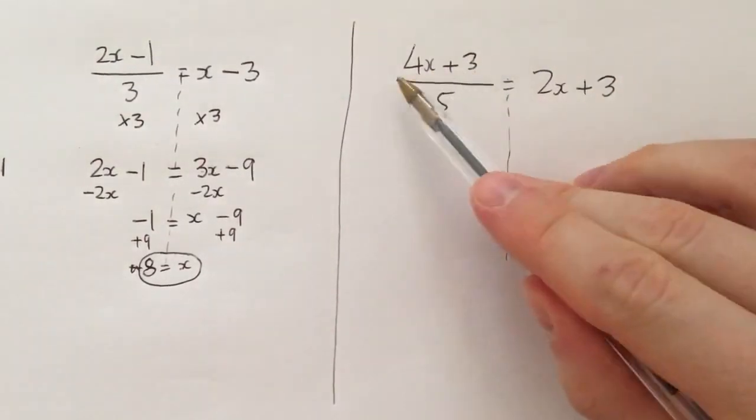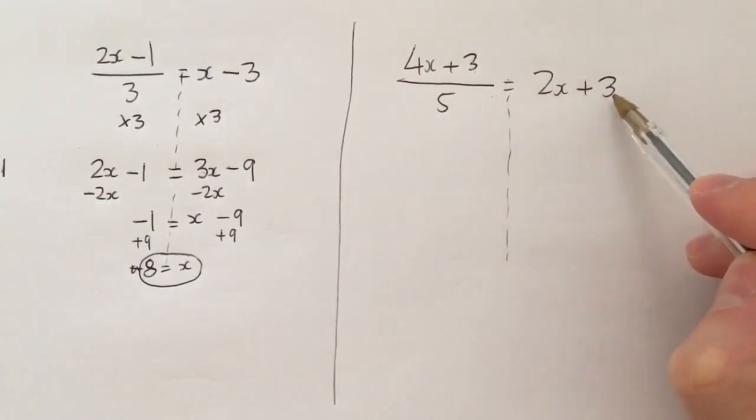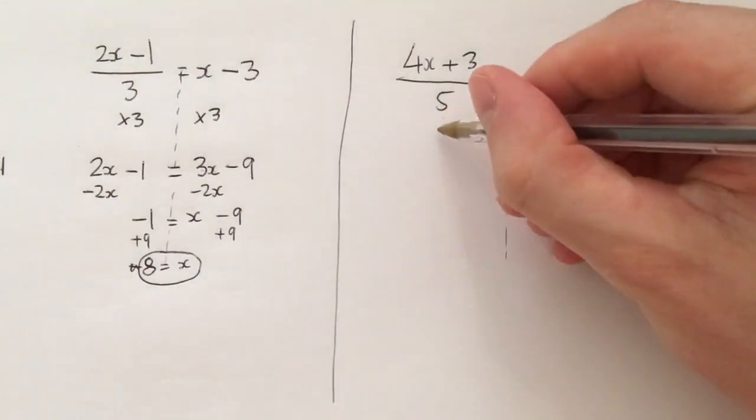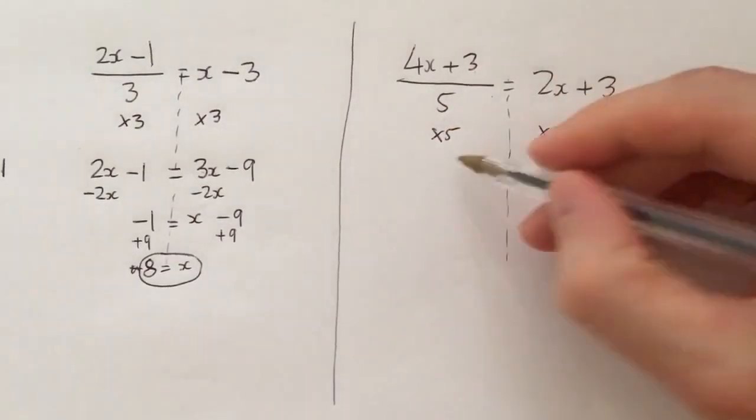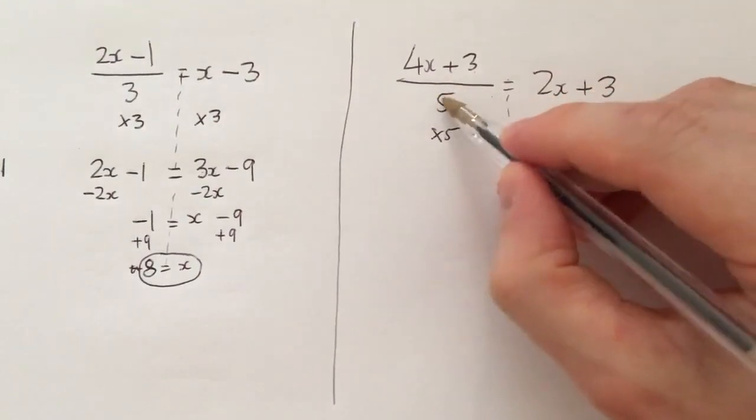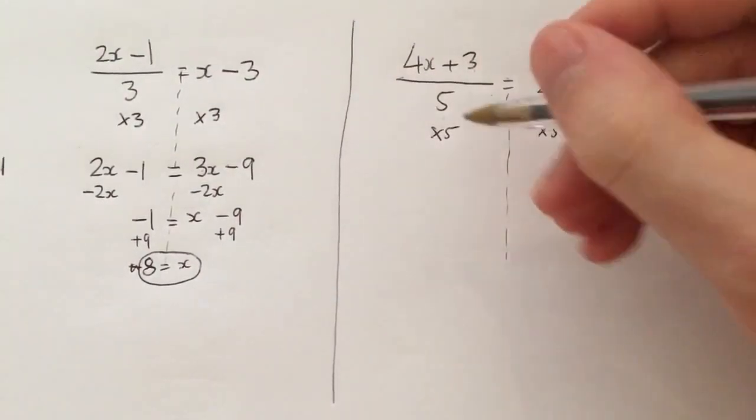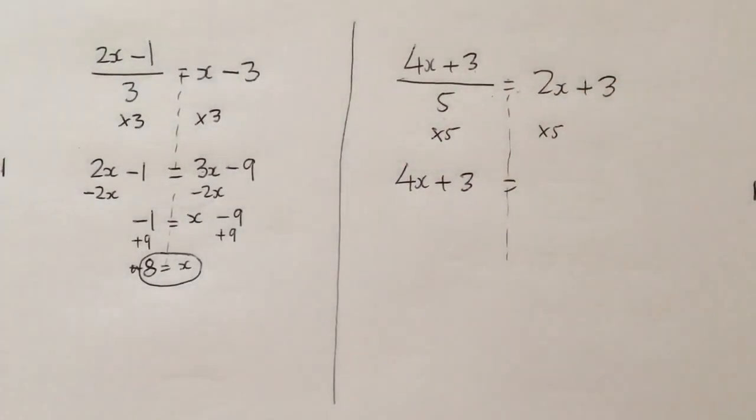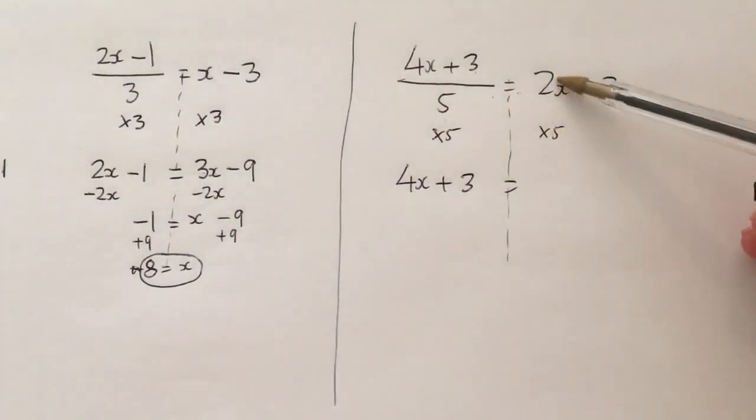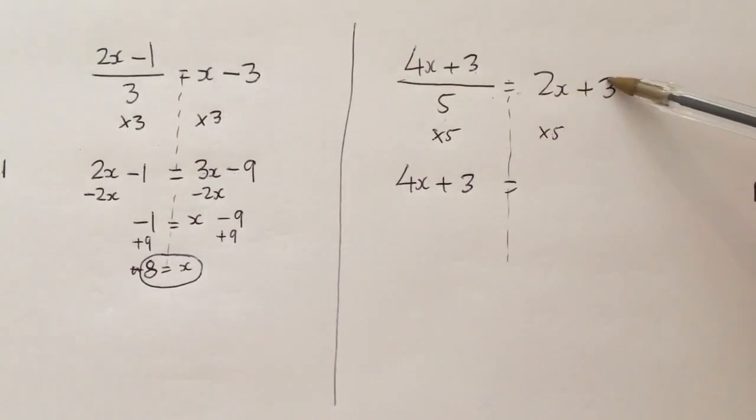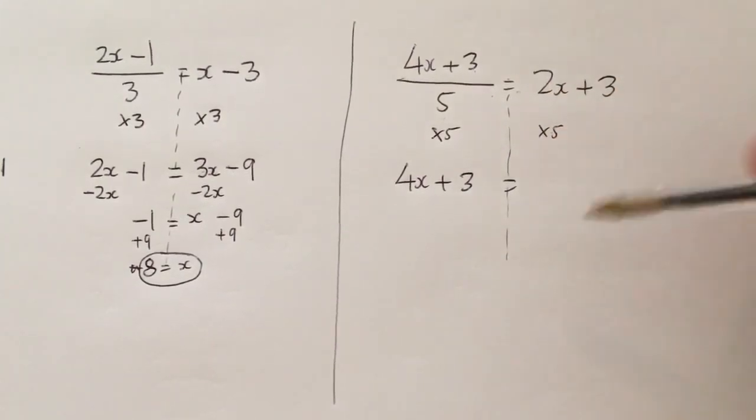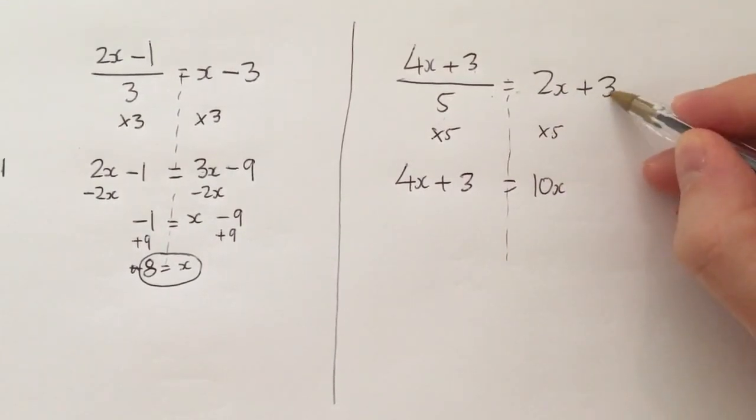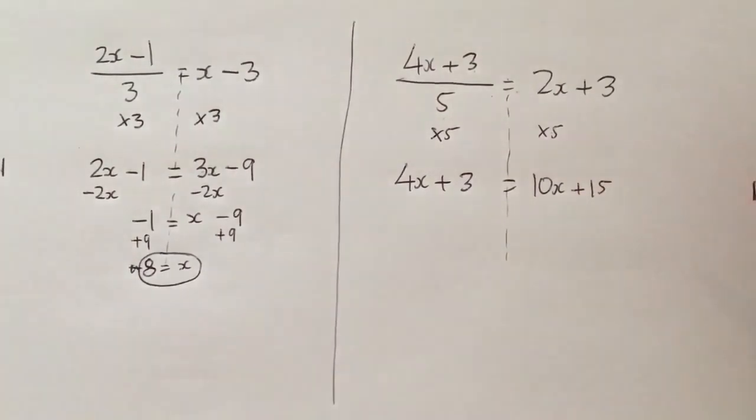4x plus 3 divided by 5 equals 2x plus 3. So the last step I did on this side was to divide by 5, so the first step I'm going to do is to times by 5, times by 5. As we know from the previous example, divided by 5 times by 5 cancels out, leaves me with 4x plus 3 equals. Then please do not forget, you need to multiply both the values by 5. So 2x times 5 is 10x, positive 3 times 5 is positive 15.